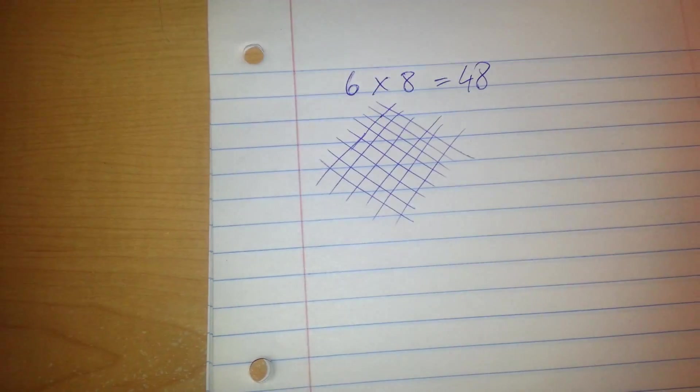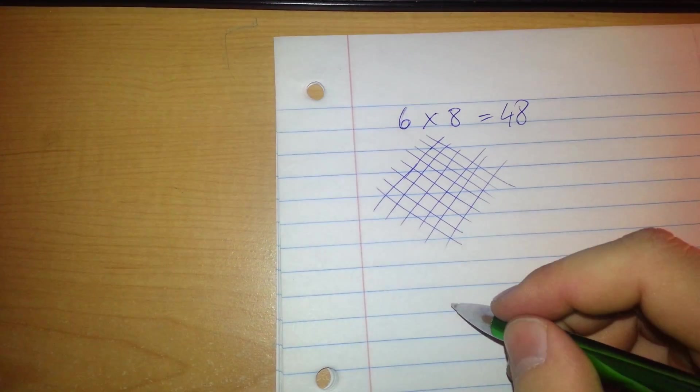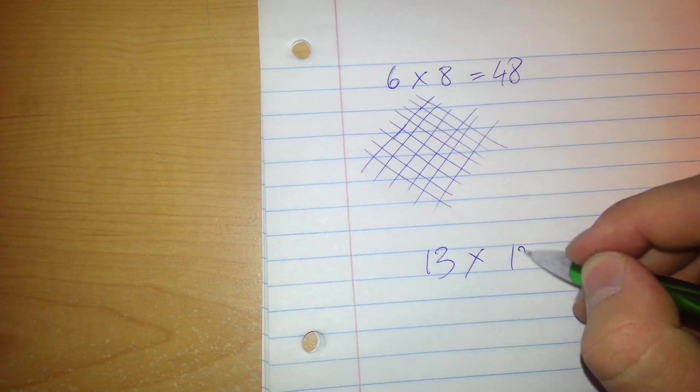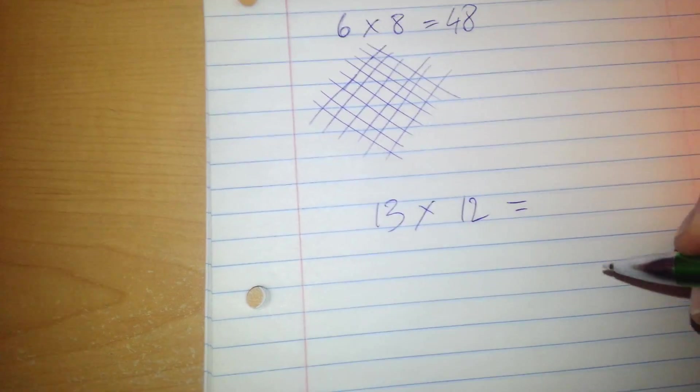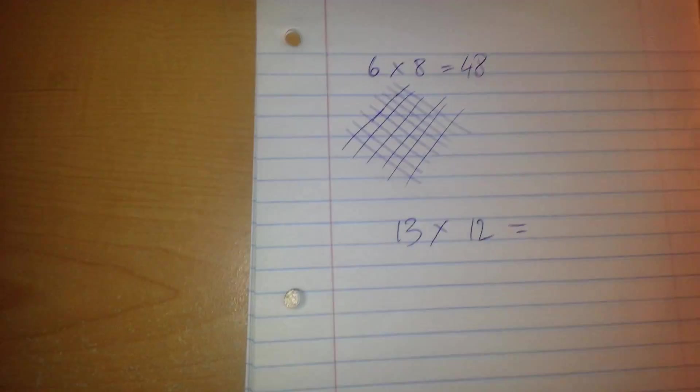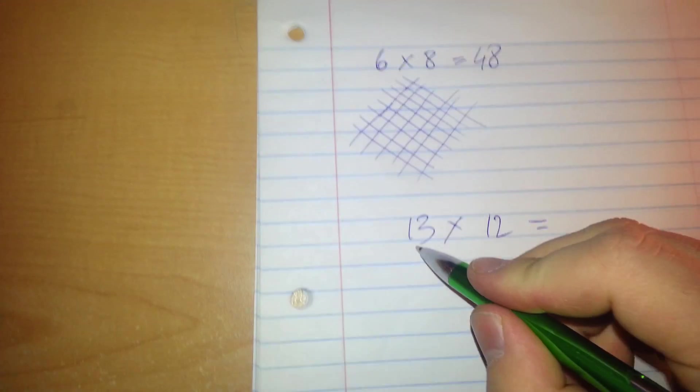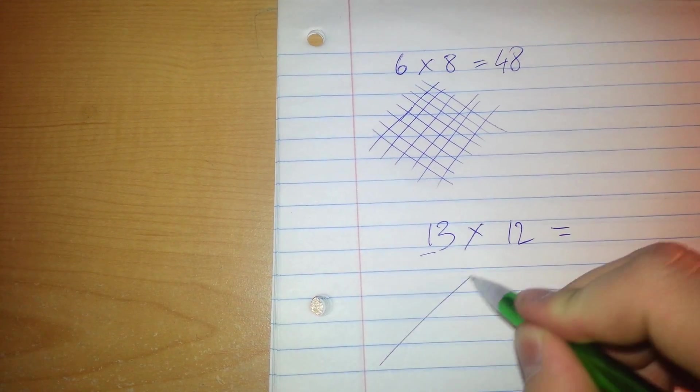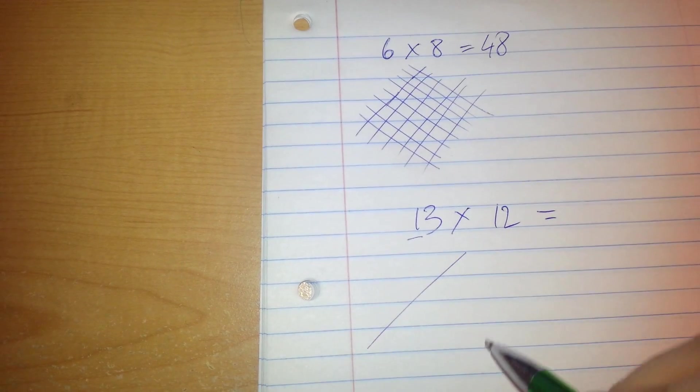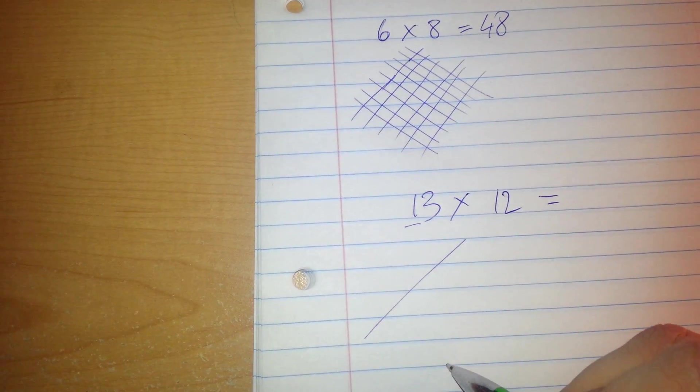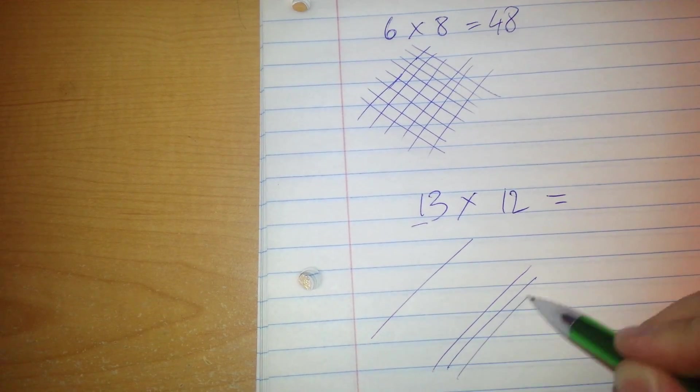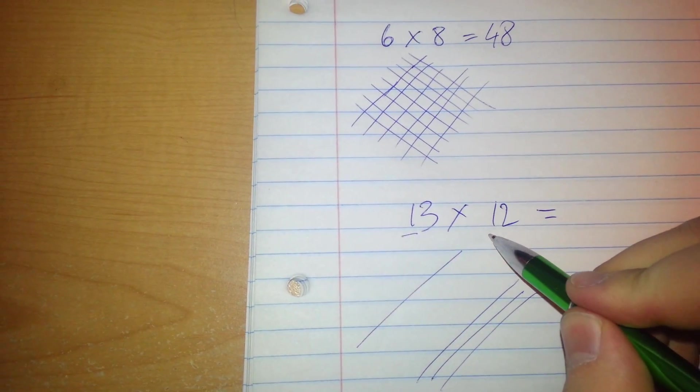Or some other number. Let's see, 13 times 12 equals. This is a little bit different. You take the one, you go this way once. Then you take the three, you take a little space: one, two, three. You take the one.